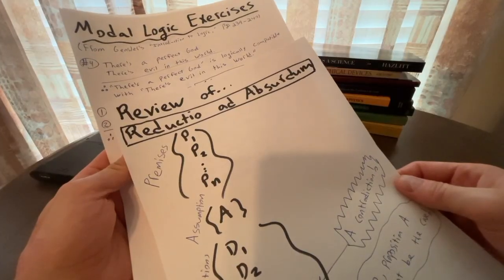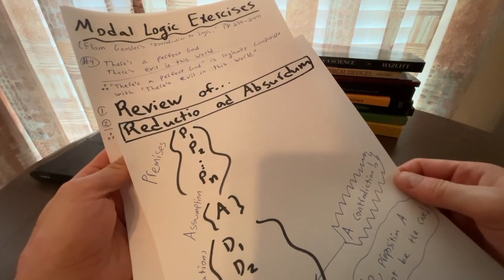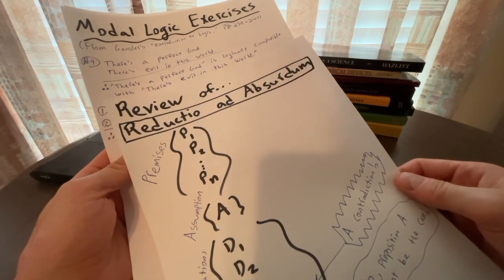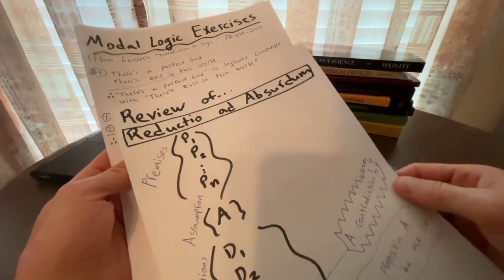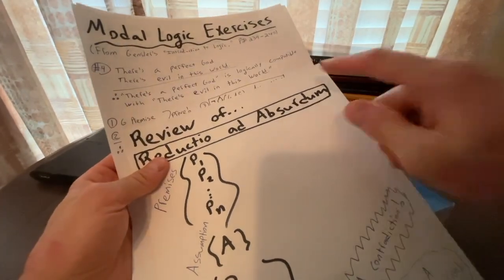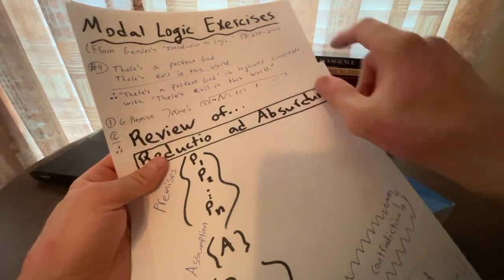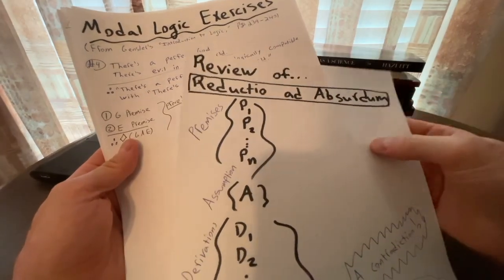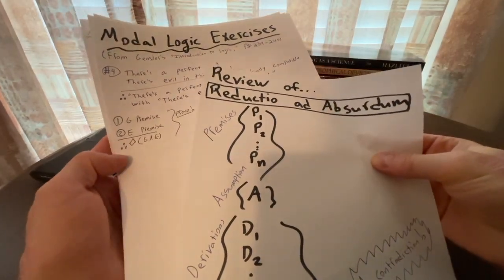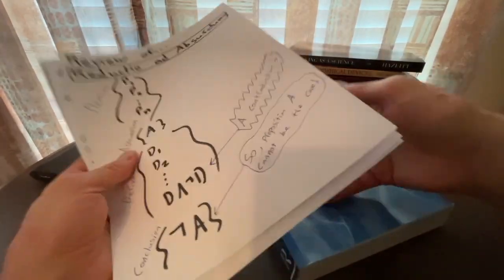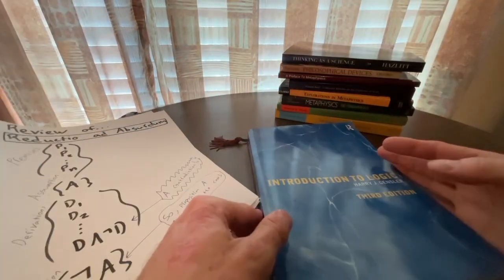Now, these example problems are from Gensler's textbook, and they're a perfect illustration that logic is not about just manipulating arbitrary symbols. We're going to look into real-world arguments, for example, from pages 239 to 240. So we're going to get back to the textbook and take a look at it, and then we'll jump into some exercises.